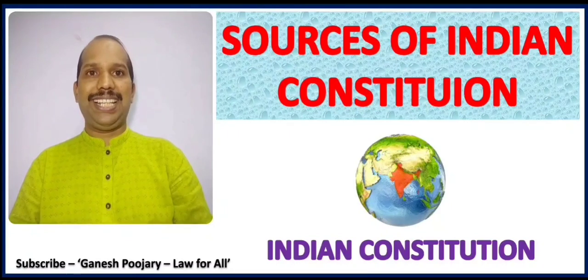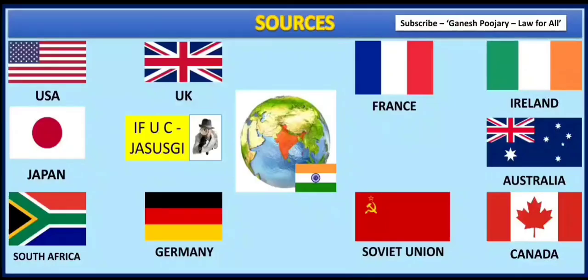I am taking you to my first slide. Just like a cricket team, we have 11 important sources for the Indian Constitution, starting from the Government of India Act 1935 — meaning India itself is a source. Along with that, we have USA, United Kingdom, France, Ireland, Australia, Canada, Soviet Union, Germany, South Africa, and Japan as the sources. We have taken ingredients from all these Constitutions to make our Constitution.